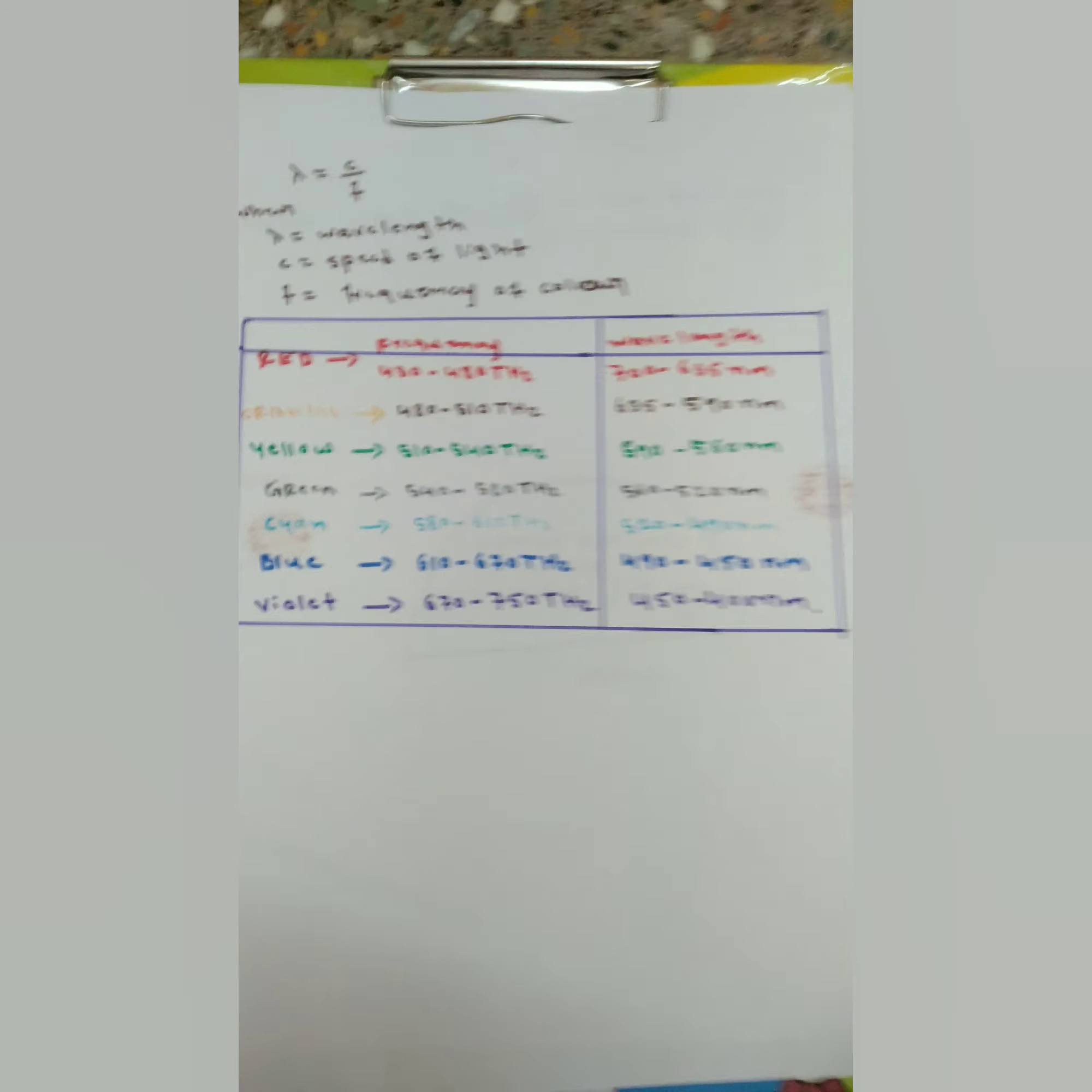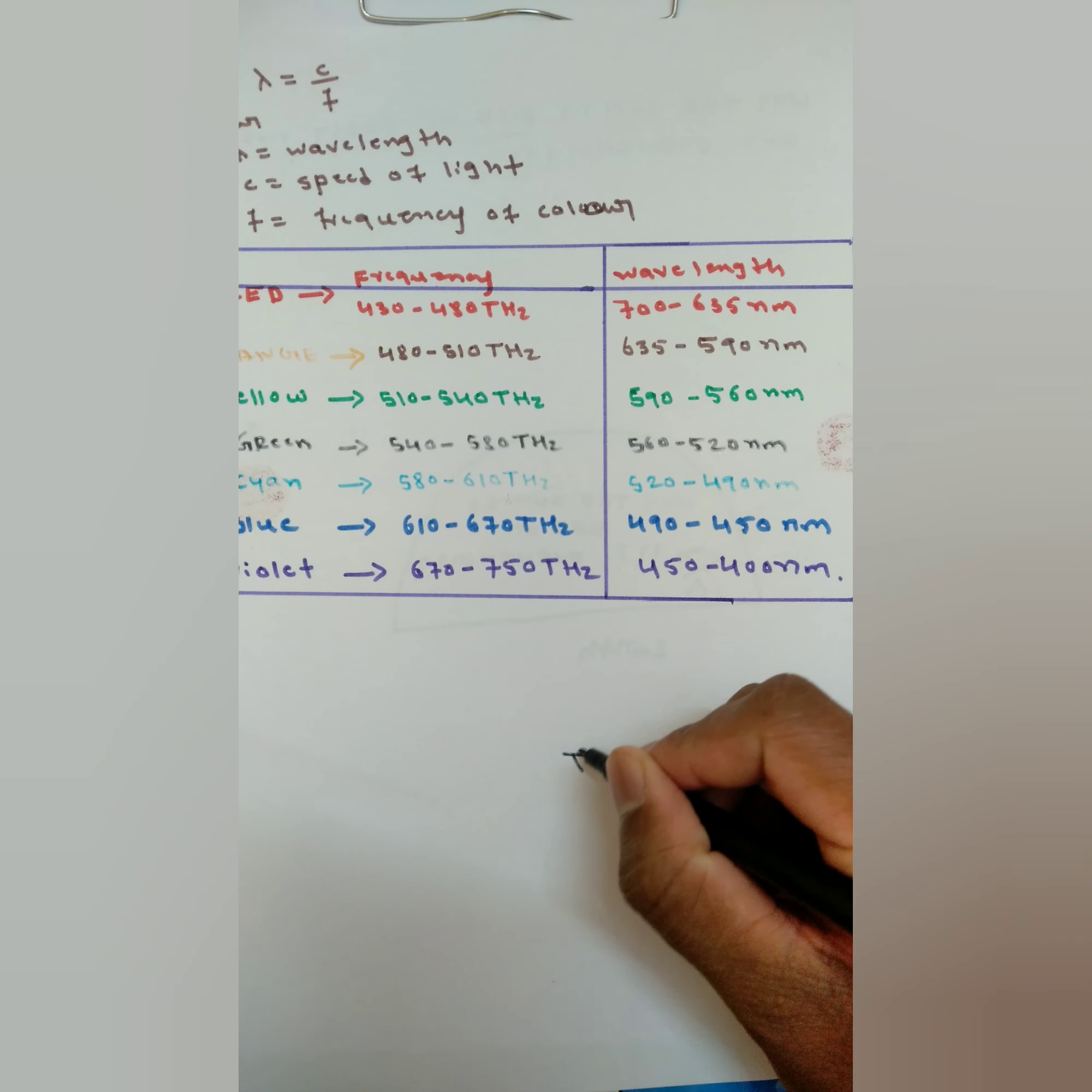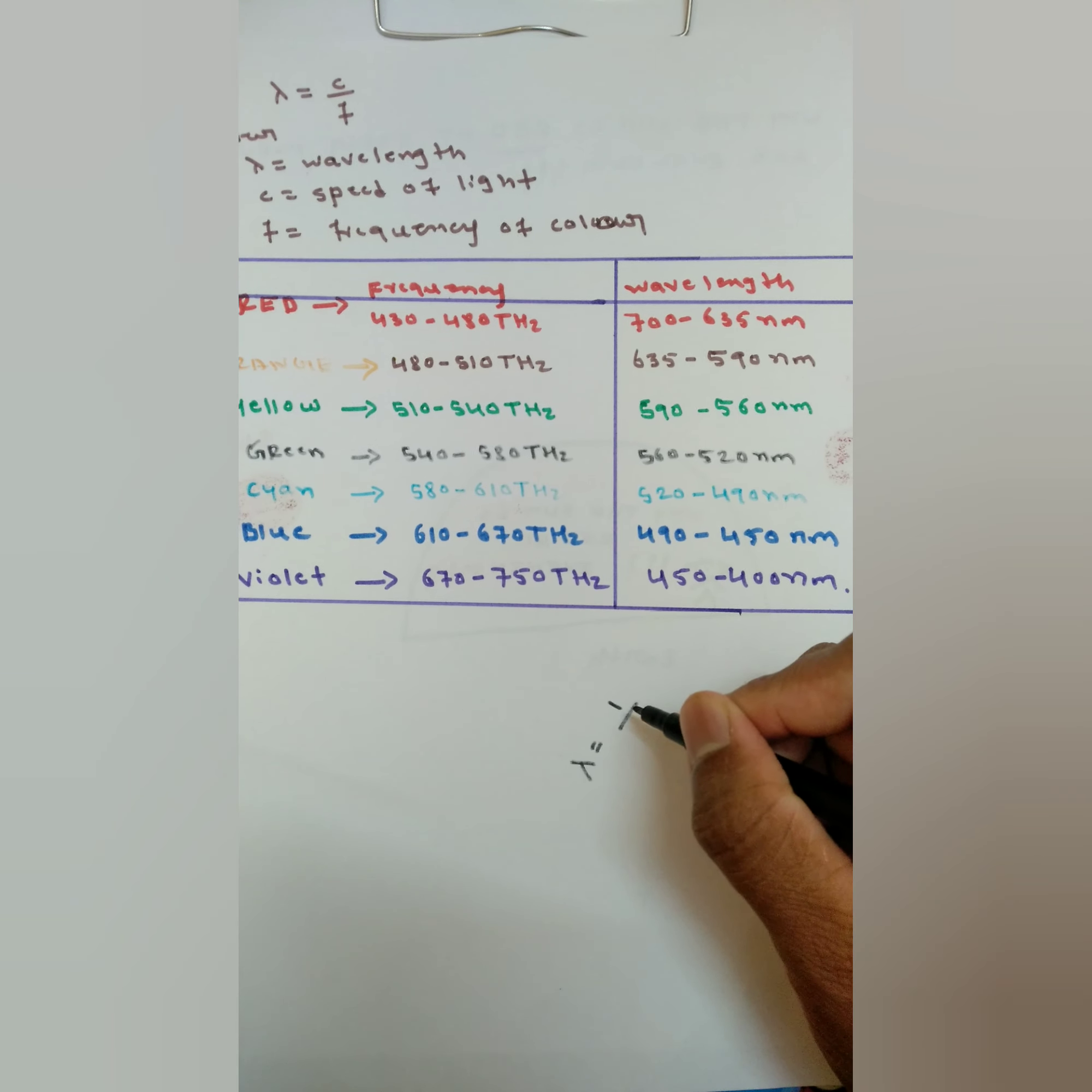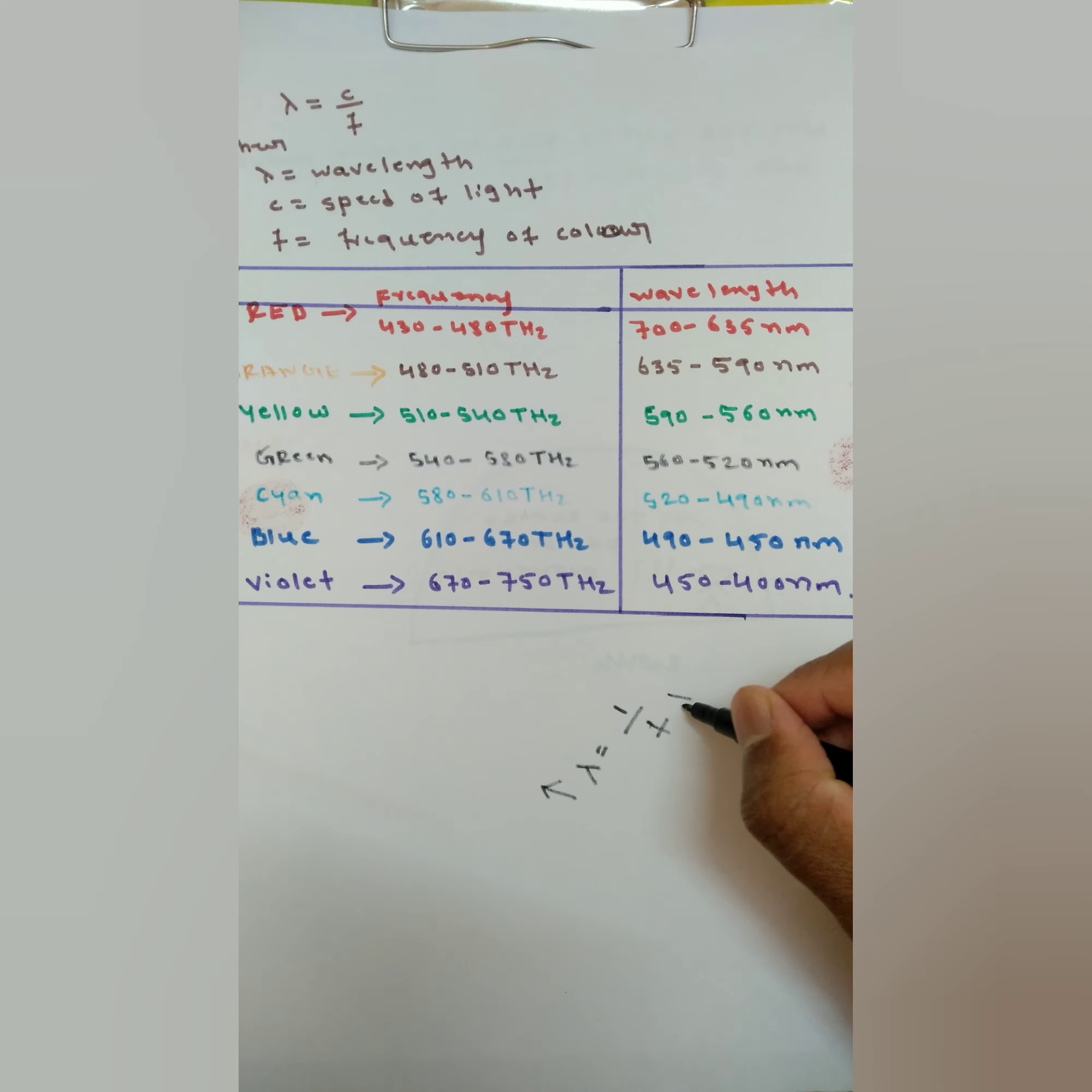Lambda equals c by f, so they are inversely proportional. If lambda increases, then frequency will decrease. If frequency increases, lambda will decrease.